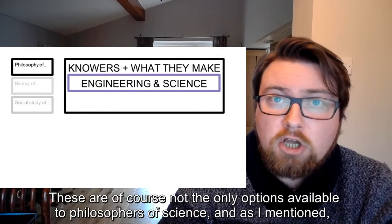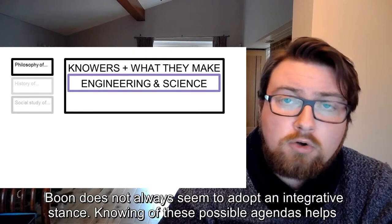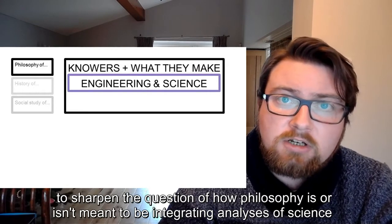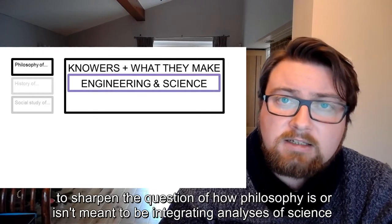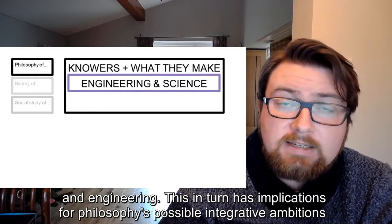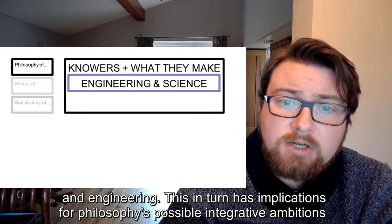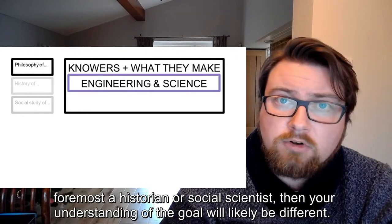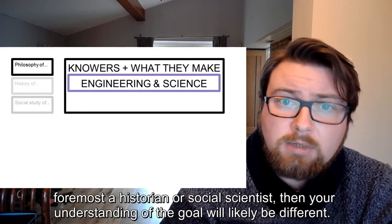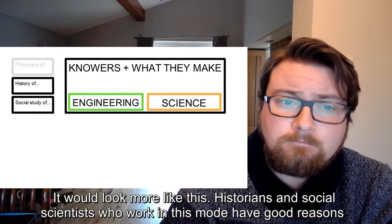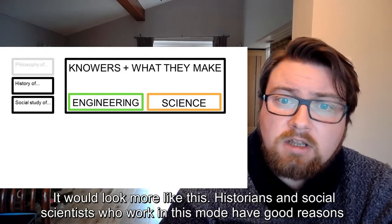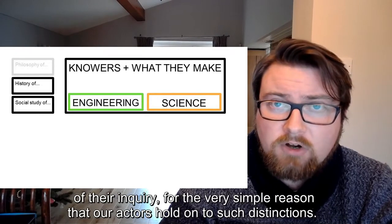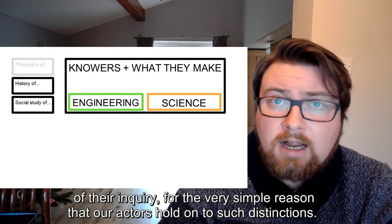These are, of course, not the only options available to philosophers of science, and Boone does not always seem to adopt an integrative stance. Knowing of these possible agendas helps to sharpen the question of how philosophy is or isn't meant to be integrating analyses of science and engineering. This in turn has implications for philosophy's possible integrative ambitions with historical and social scientific research. Because, by contrast, if you are first and foremost a historian or social scientist, then your understanding of the goal will likely be different. Historians and social scientists who work in this mode have good reasons to keep engineering and science's potential distinctions close to hand, at least at the outset of their inquiry, for the very simple reason that our actors hold on to such distinctions.